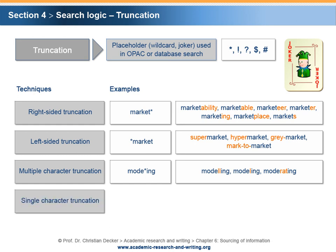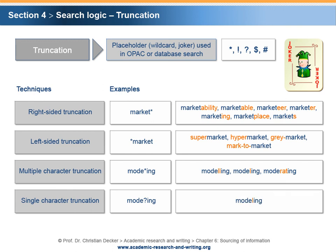Single-character truncation: the example 'mode?ing' retrieves literature titles containing the word 'modeling.' The advantage is that one can avoid meaningless results. The disadvantage is that it does not include findings with different spellings, such as 'modelling.' In our example, the single-character truncation would be helpful to identify literature titles in American English.